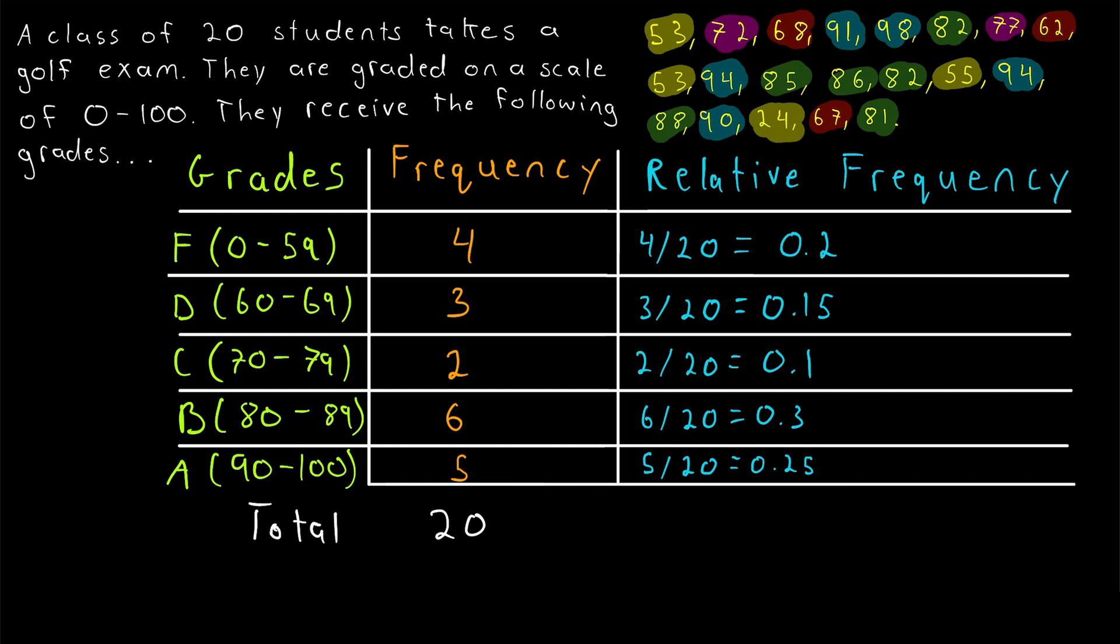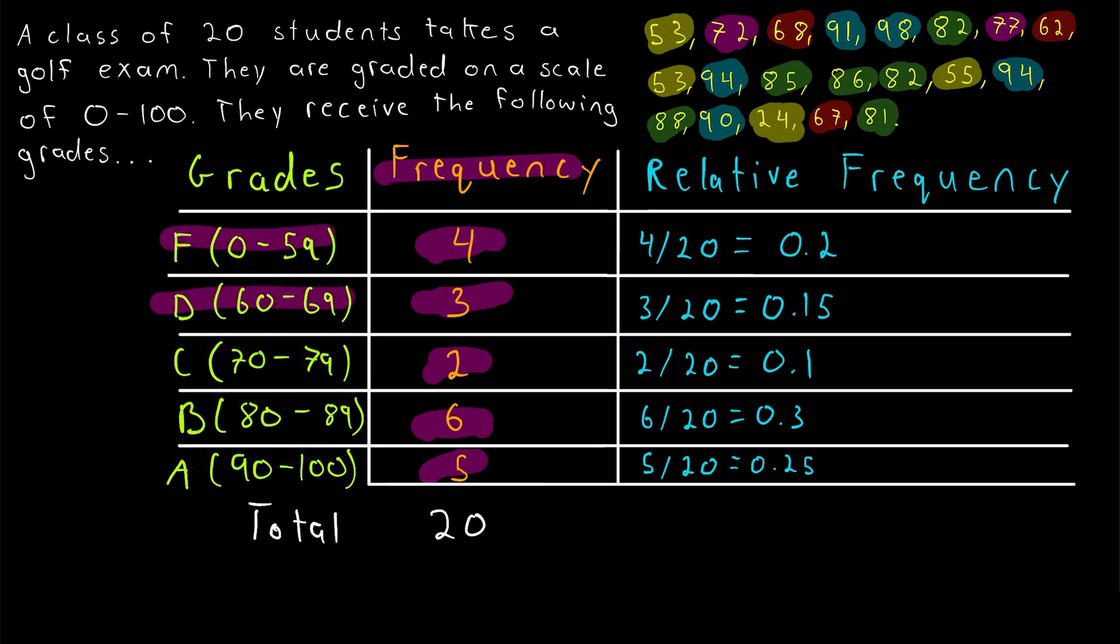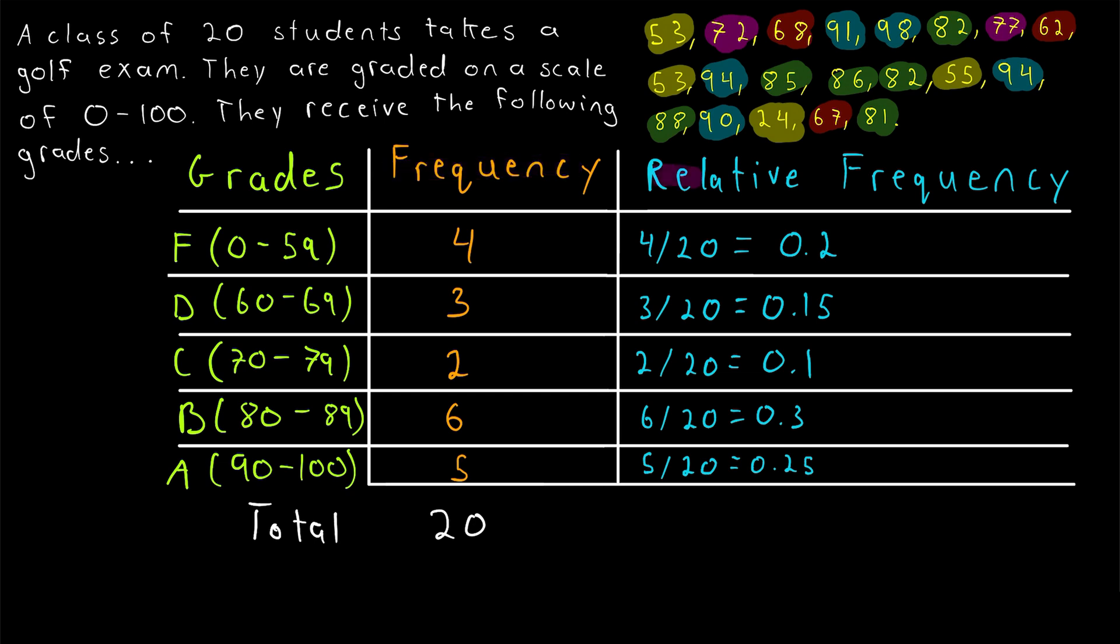So remember for a relative frequency table, in the first column we have the data. In the second column we have the frequency. The number of times each data point occurs or the number of data points that fall in each interval depending on how you choose to sort your data. And then the relative frequency column just gives us the frequency of each data point or data interval relative to the total. So just take the frequency and divide by the total number of data points. Now to complete the table let's just erase all of these unnecessary fractions.